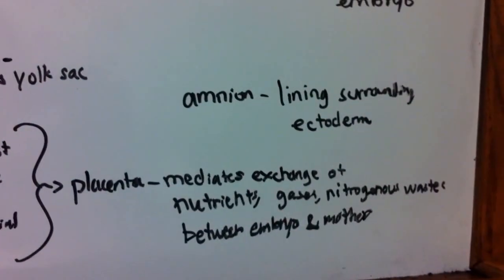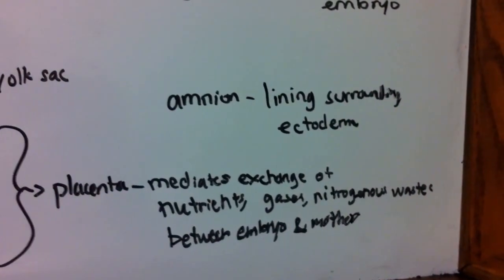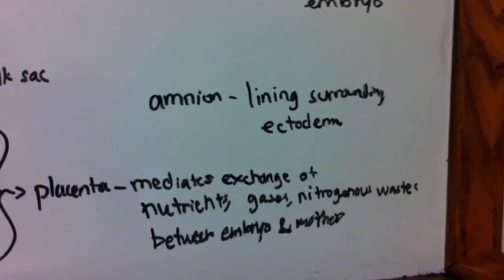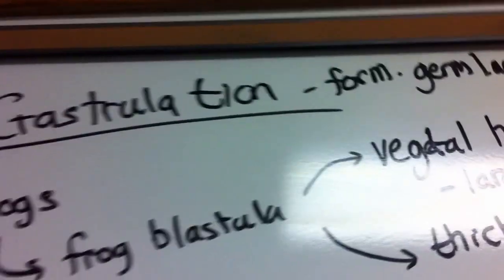The placenta will mediate the exchange of nutrients, gases, and nitrogenous waste between the embryo and the mother. That is gastrulation for humans, and the next step in embryonic development is, of course, organogenesis.